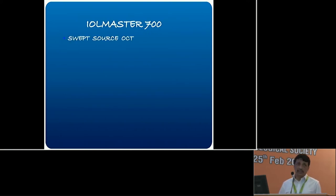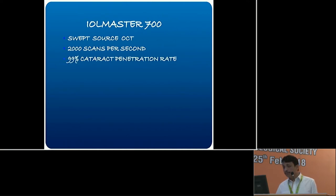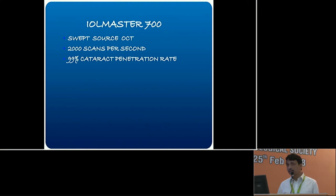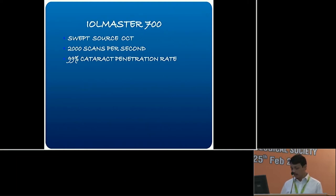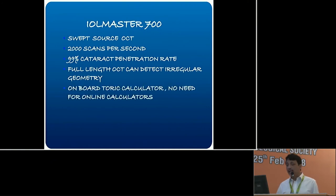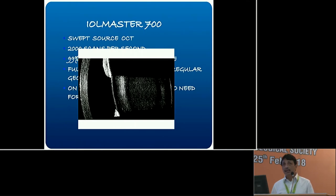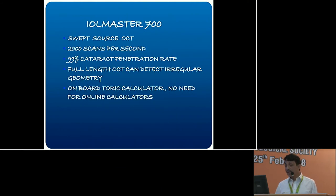The IOL Master 700 was launched in 2014 — the 500 was the initial version. The 700 uses OCT technology, calculating 2,000 scans per second, which is astonishing. Zeiss claims a 99% penetration rate, meaning dense PSCs and nuclear sclerosis can be managed. The OCT can detect irregular geometries such as lens tilt before surgery. It also has an onboard toric calculator, so no online calculator is needed. The 700 seems a very, very good option.